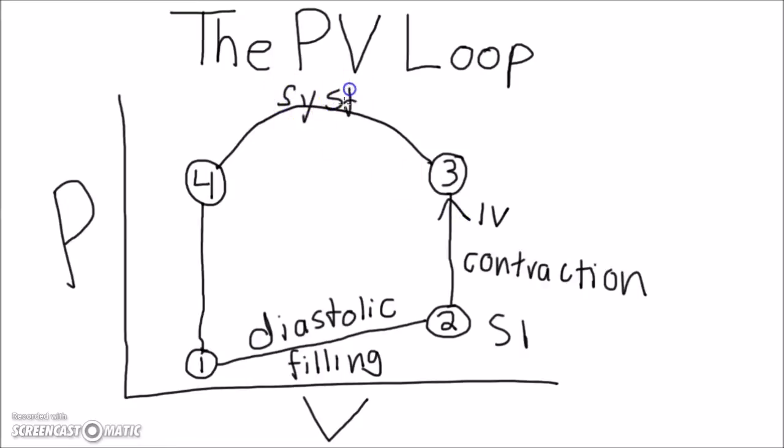Once you have enough pressure to overcome the blood pressure in the aorta, the aortic valve opens at point 3, and there is systolic injection from 3 to 4.